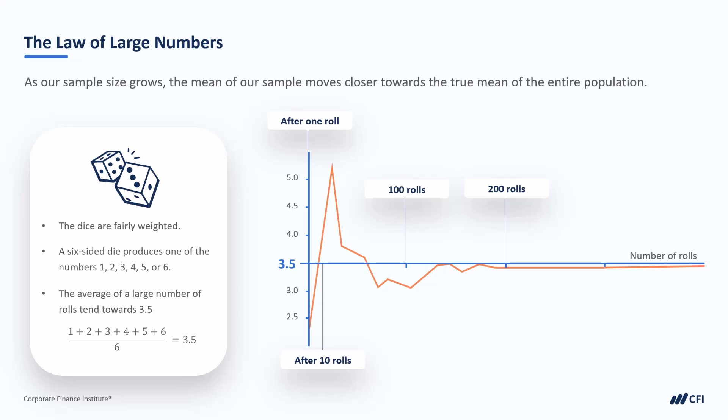But how much variation we see depends significantly on how big our sample is. After one roll, your average can never be 3.5. It's not possible as a result. After 10 rolls, we might have an average closer to 3 or 4, but it's quite common that it's a bit ways off 3.5. But as we increase our simulation to 50 rolls, then 100, our measures tend to move closer and closer to the true mean. By 200 rolls, you tend to get a number very close to 3.5 in simulation after simulation after simulation.